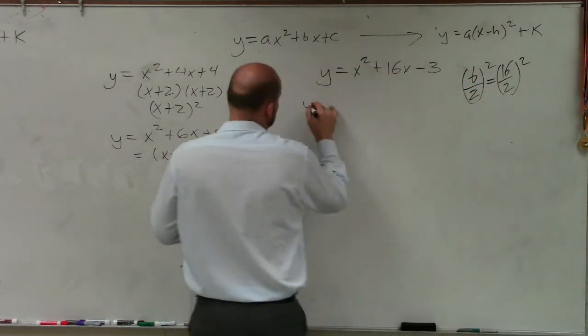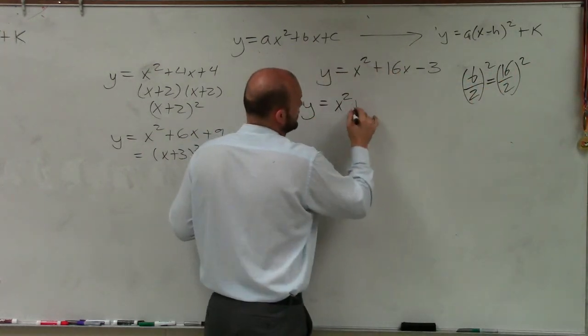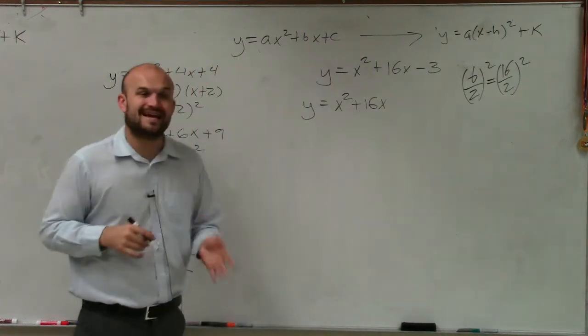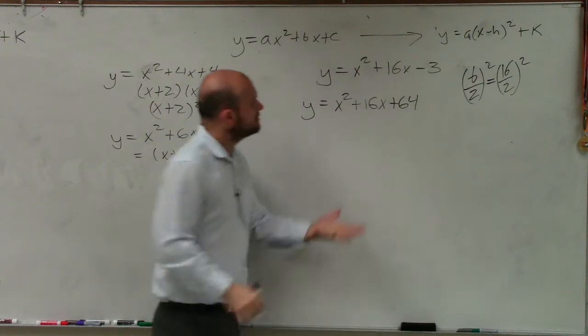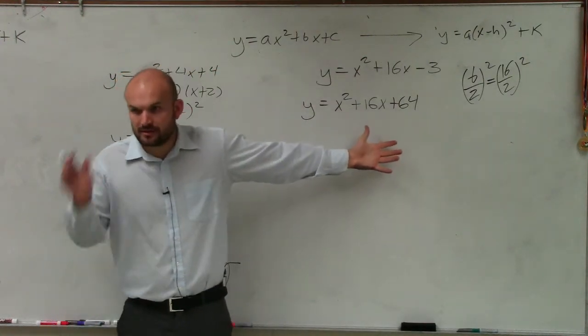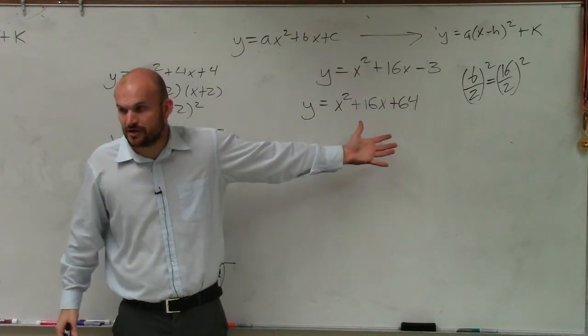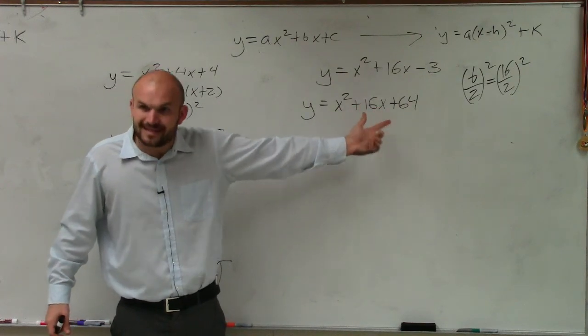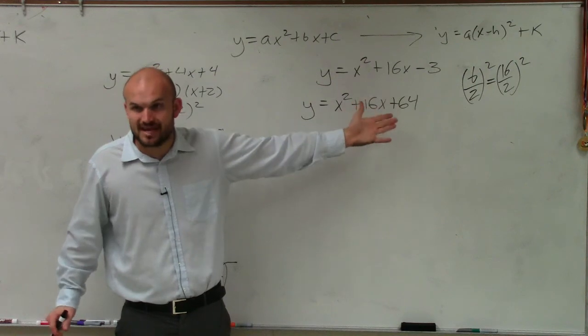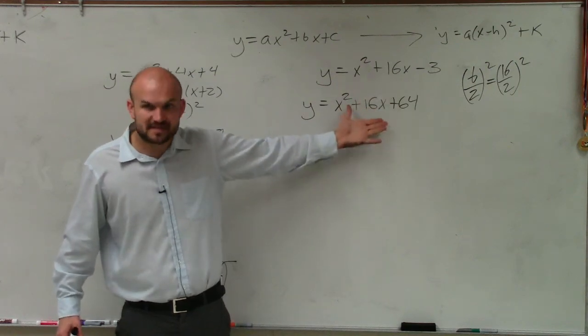So therefore, I have y equals x squared plus 16x. 16 divided by 2 is 8. 8 squared is 64. Is this a binomial squared? Can I factor that out to a perfect square trinomial? Or sorry, is this a perfect square trinomial? Can I factor that out to a binomial squared? Yes. That can be factored to x plus 8 squared, right? x plus 8 times x plus 8.